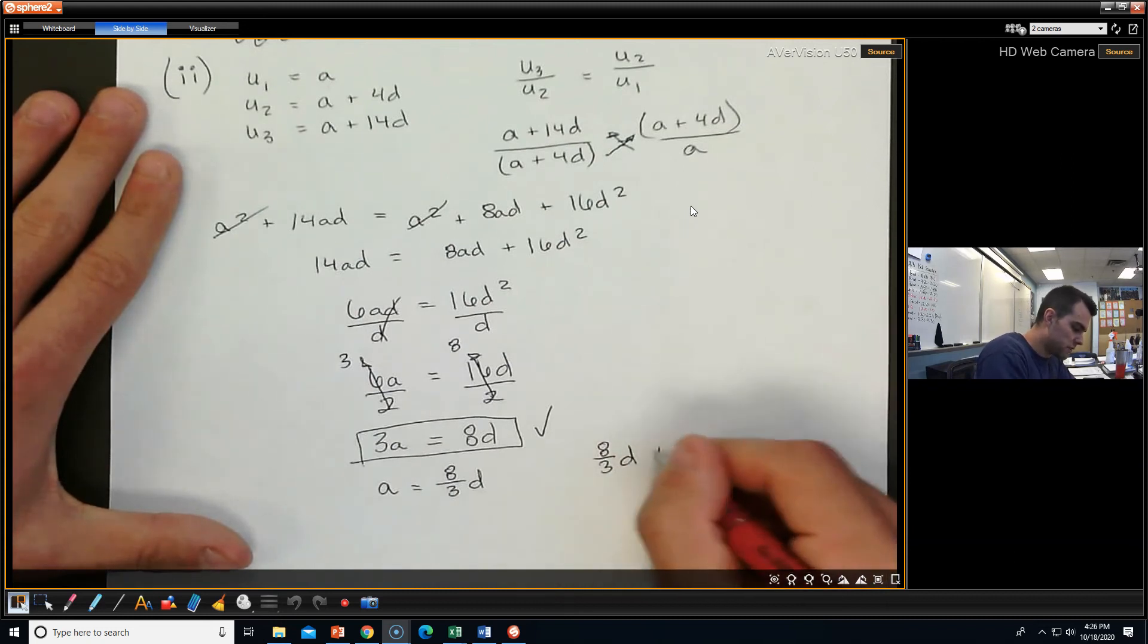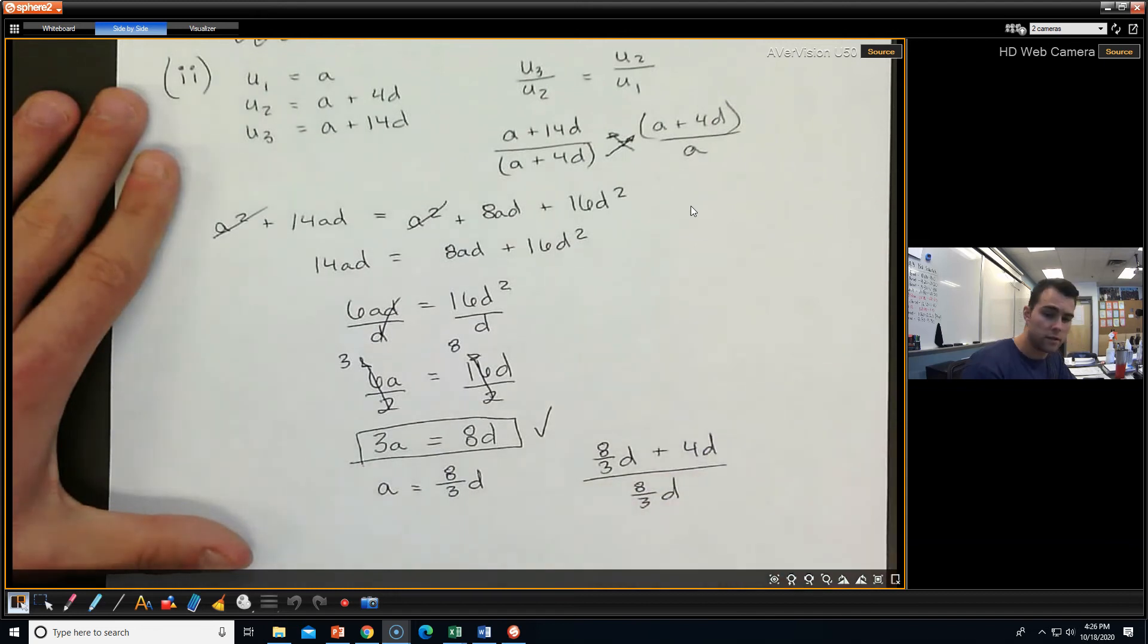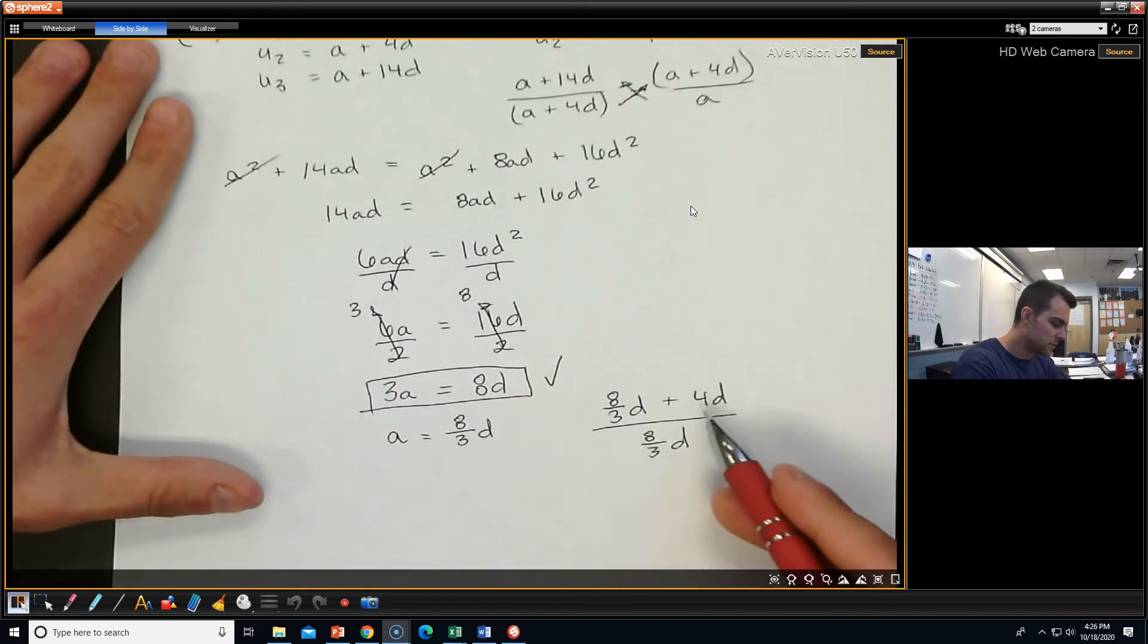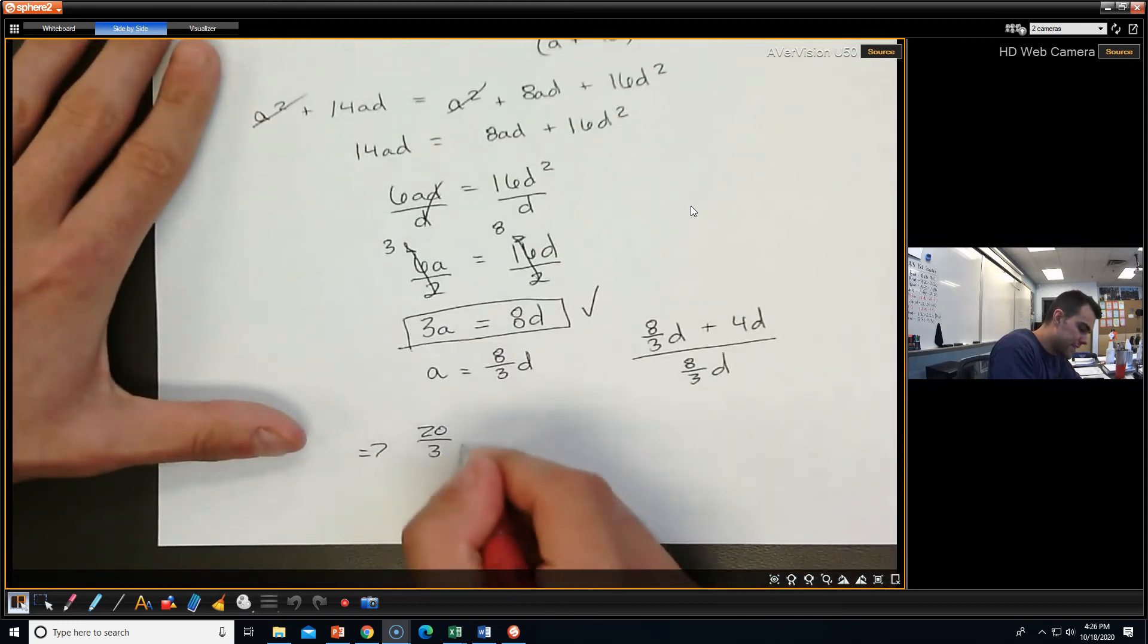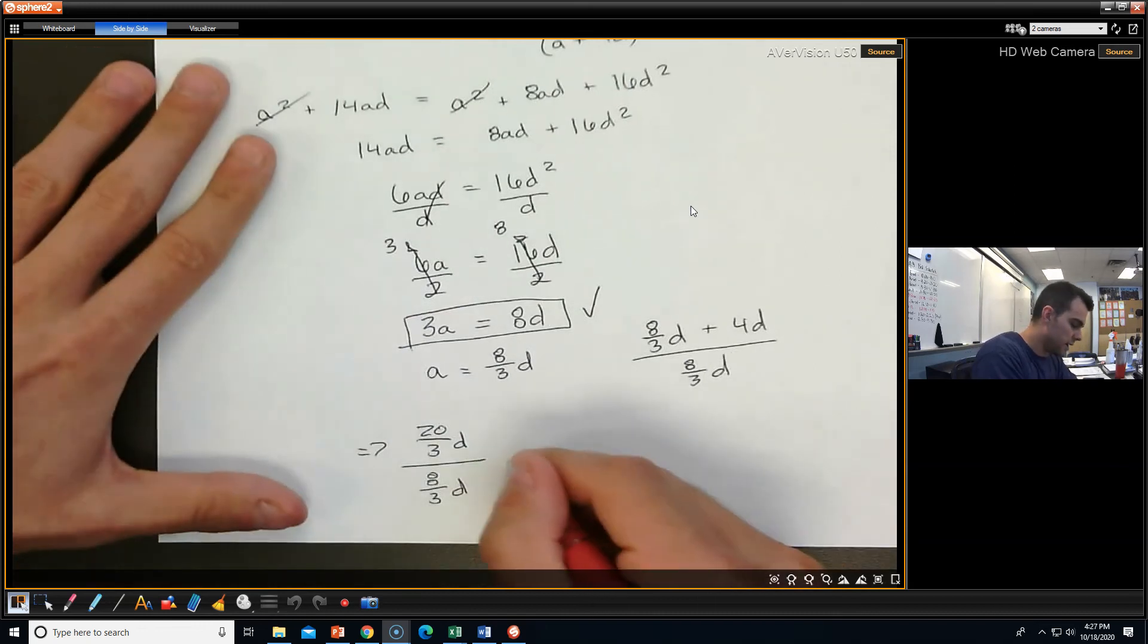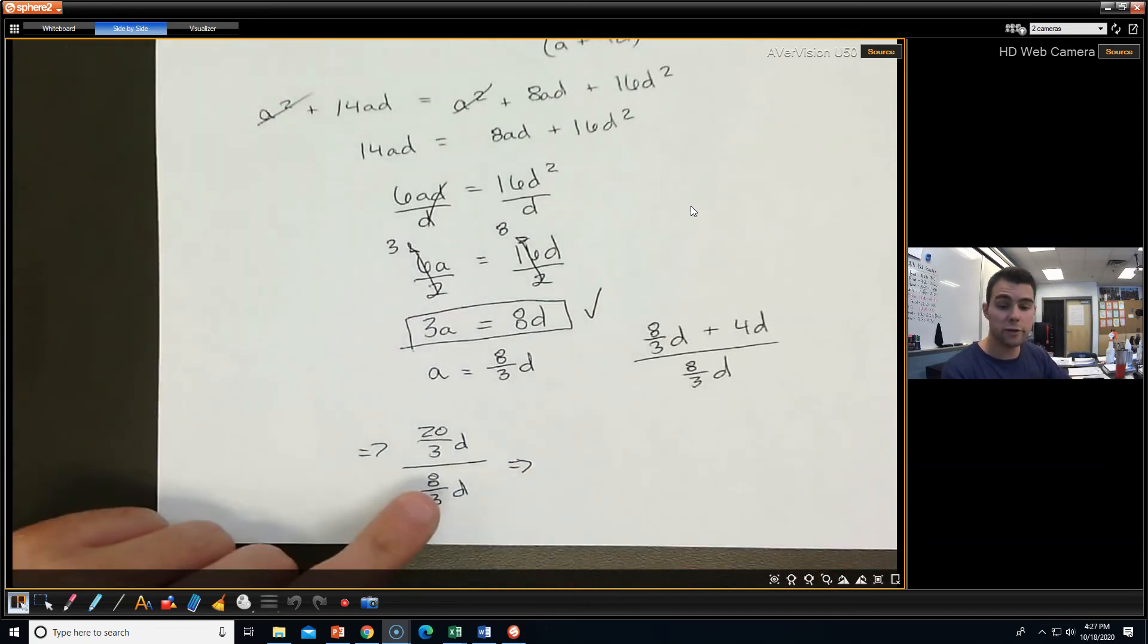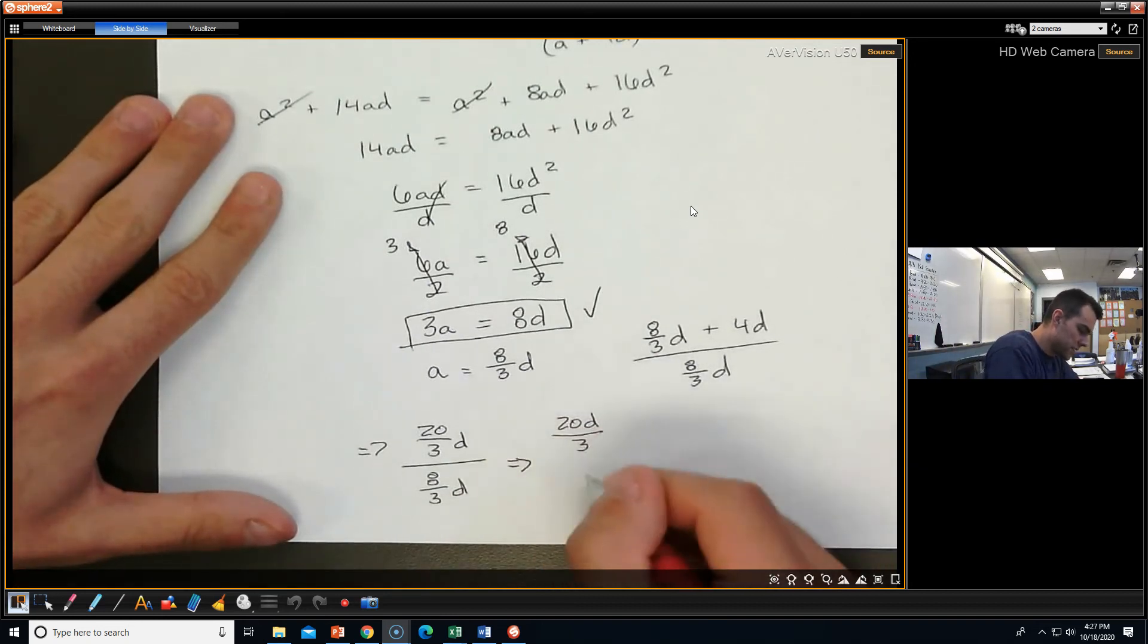So 8 thirds D plus 4D over 8 thirds D. Let's combine like terms up top. I'm going to make this into 12 thirds. So this would be on top. We're going to get 20 thirds D divided by 8 thirds D. And I want to make something very clear here. This D, when it's next to it like that, it's implied it's up top. Why is that important? You're going to see in a little bit.